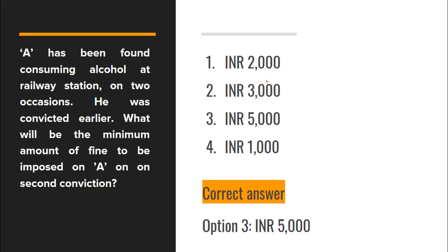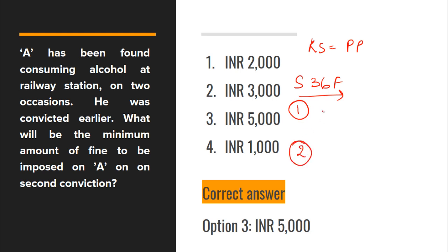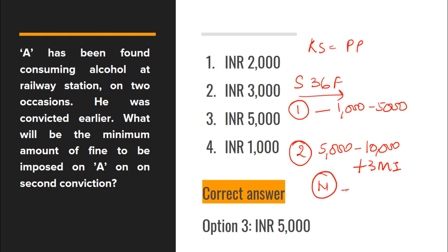Next question: A has been found consuming alcohol at a railway station on two occasions. Remember — railway station is a public place. The relevant provision is Section 36f, which deals with first and second conviction. For first conviction: minimum fine is 1000, maximum 5000. For second conviction: minimum fine is 5000, maximum 10,000, plus 3 months imprisonment. Also, if nuisance is created after consuming alcohol at a public place, minimum fine is 10,000 extending to 20,000, plus 3 months imprisonment. Since this is the second conviction, minimum fine is 5000 — option 3 is correct.